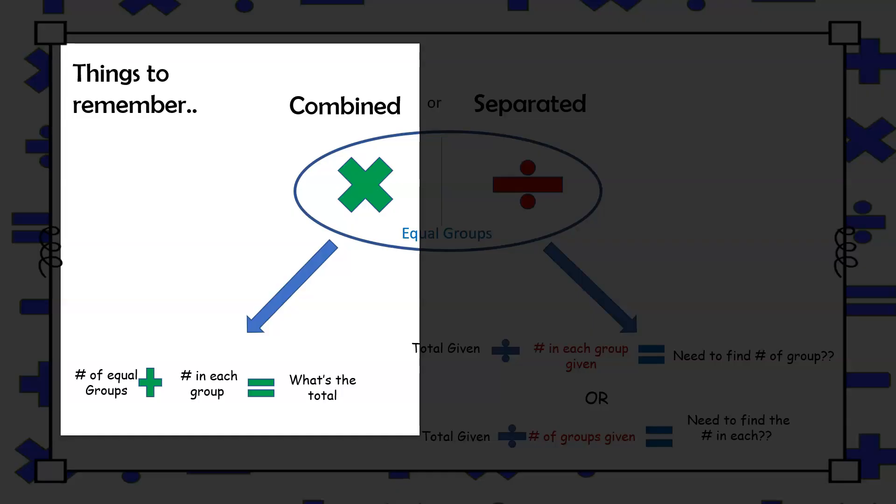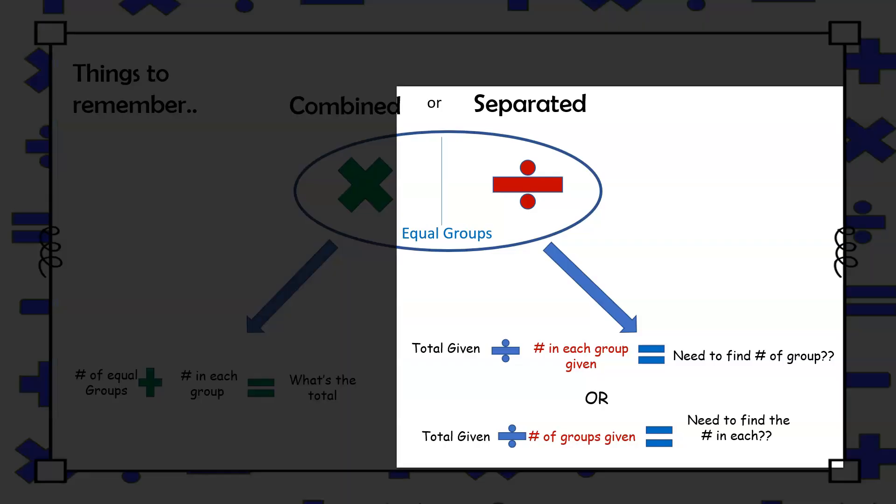However, with division, if the total is given, and the amount is being separated into equal groups in either the number of groups or the number in each group needs to be determined, then division should be used.